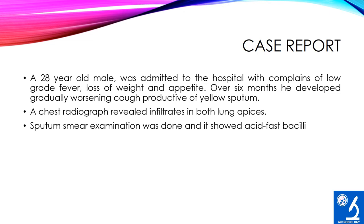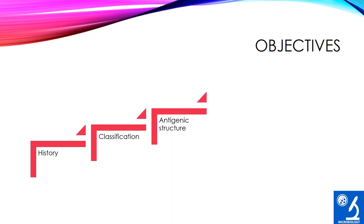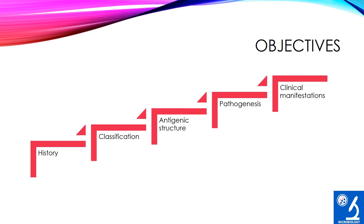The disease is pulmonary tuberculosis and the agent is Mycobacterium tuberculosis. This case will frequently be asked in your exam as a long question, so take note of it. The objectives of this session: first we will see the history, then classification of mycobacteria, then antigenic structure of mycobacteria, then pathogenesis of tuberculosis, and finally the clinical manifestations.